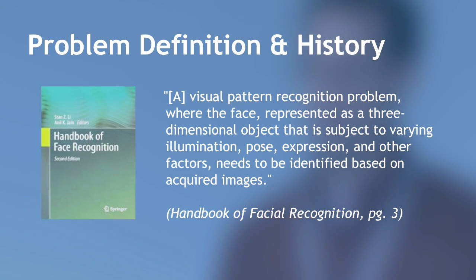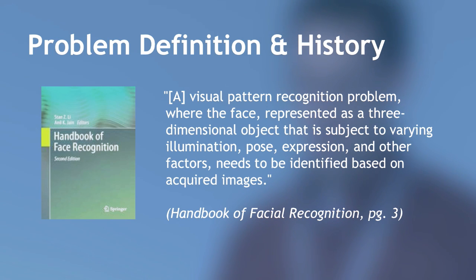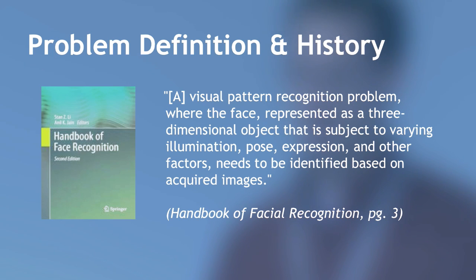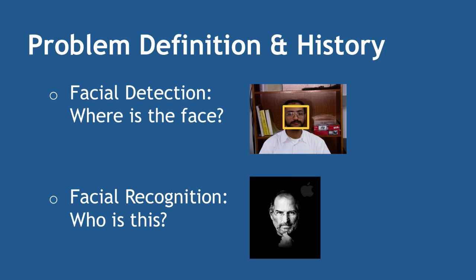There's a really good book called the Handbook of Facial Recognition — it's really thick and a horrible thing to try to learn from, but it's great for a good survey of what's available. They define it as a visual pattern recognition problem where the face is assumed to be 3D, subject to varying things that throw the process off: illumination, pose, expression, and other factors, across a set of images you're trying to identify.